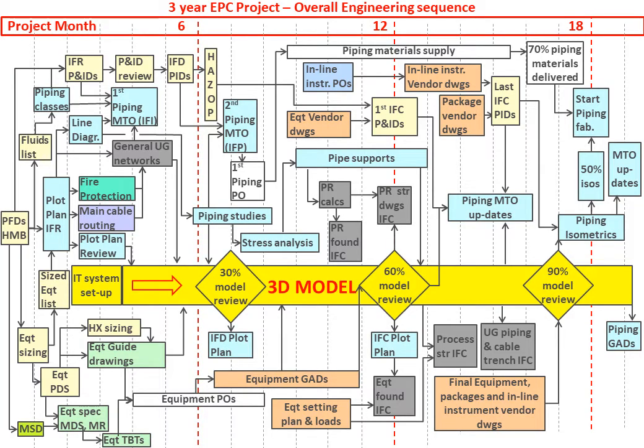The timeline at the top shows the typical schedule for a three-year EPC, so you may adjust it depending on your project duration. This synoptic shows all key sequences and all key interfaces between disciplines, which are shown in different colors.